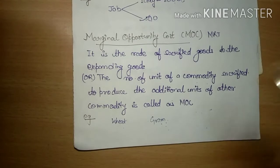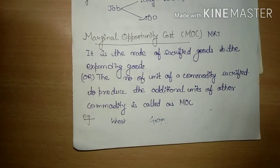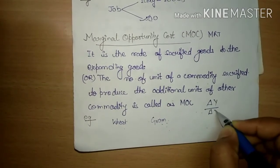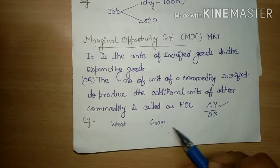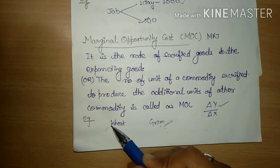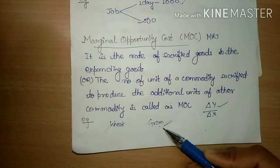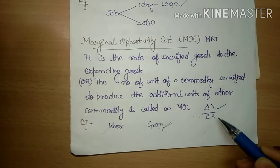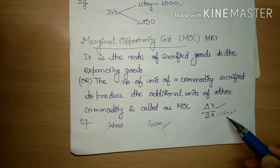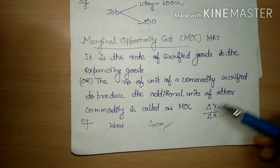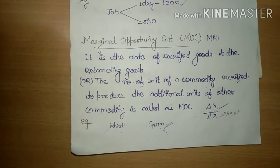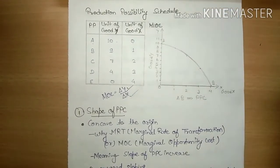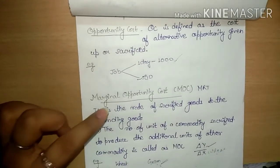Jab aap PPC curve ka calculation kar rahe the, toh usme yahi cheez discuss ki gayi thi. Bas usme jo difference tha dono ka — jaise iска formula hota hai: change in Y by change in X. Change in Y matlab jo lose karta hai — jaise yahan kaun lose kar raha hai, woh lose kar raha hai. Aur humne iska expand kar diya production — toh gram ka jo hai, woh kitne bhi units mein changes aaye hain, woh hamara Y ho jaayega. Aur yahan denominator mein X hai, jaise wheat aa jaayega — toh wheat ke goods mein kitna bhi change aaye, matlab kitna badh gaya, toh yeh cheez ho jaati hai change in Y by change in X. Toh yeh aapka formula ho jaayega.